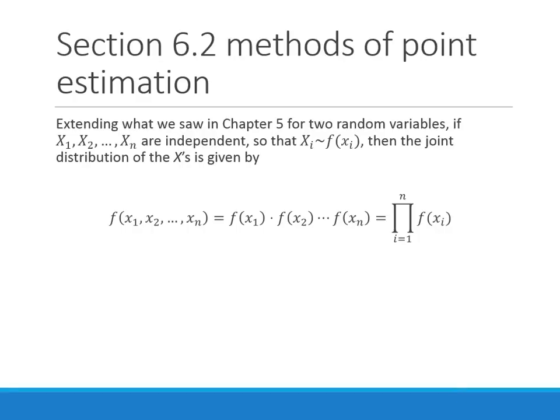Remember what we saw back in chapter 5: if we have two or more random variables and they are independent, we can take the product of their marginal distributions to get their joint distribution. So the joint distribution of a random sample is just the product of the individual distributions.